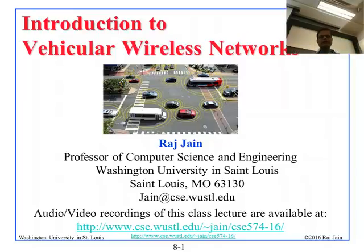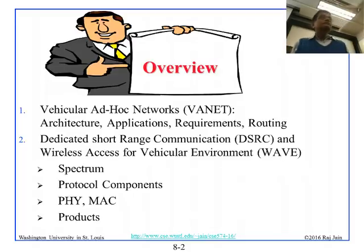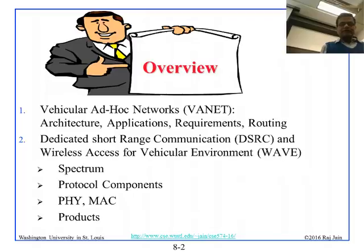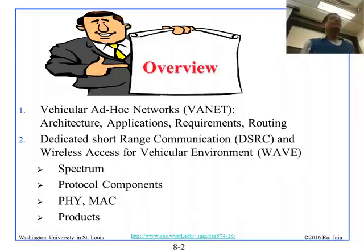We move on to the next module on Vehicular Wireless Networks. These are called Vehicular Ad Hoc Networks or VANETs. We talk about the VANET architecture, application requirements, routing, etc. And then we talk about a standard called DSRC or WAVE — Dedicated Short Range Communication — also known as 802.11p, which will come up when we talk about DSRC.